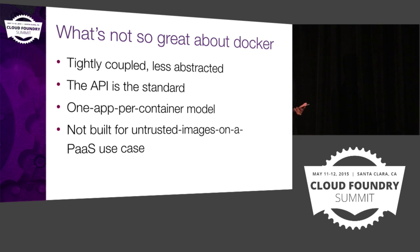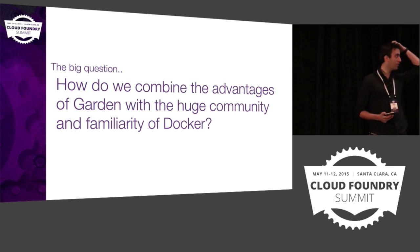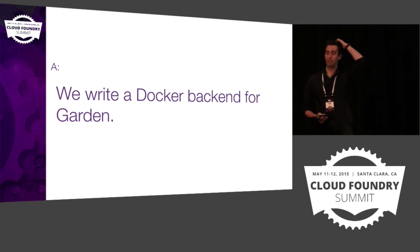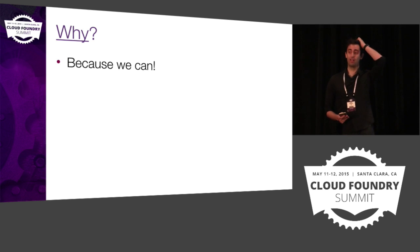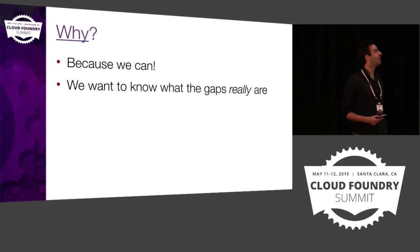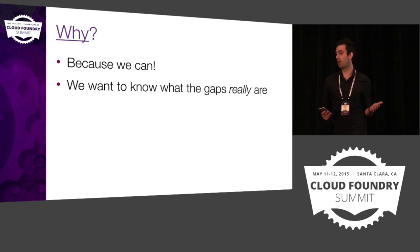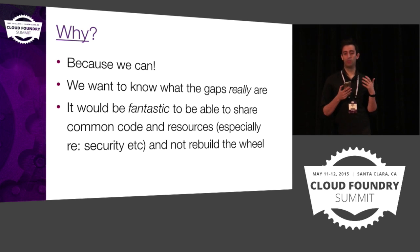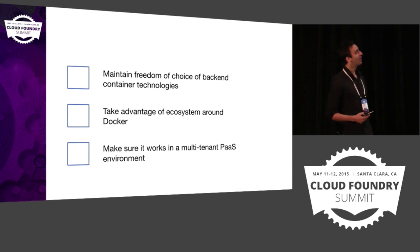That brings us to part two — building a Docker backend for Garden. How do we combine the advantages of Garden with the huge community and familiarity of Docker? We write a Docker backend for Garden. Why? Well, because we can. And because we want to know what the gaps really are. Garden does most of what we need and it's working great right now, but there is a huge community around Docker with lots of available resources. If we can take advantage of that, it would be great to not rebuild the wheel. And we'd have three goals.